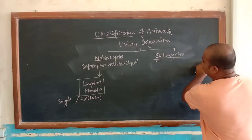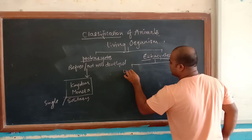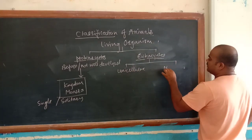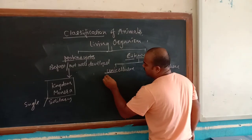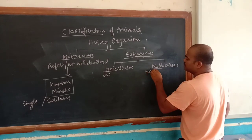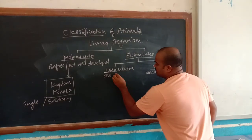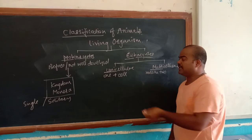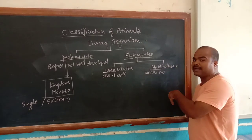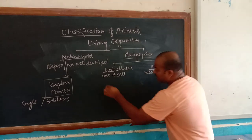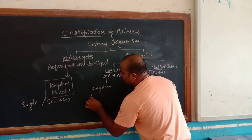In eukaryotes, it will be categorized under two subtypes. One is unicellular and the second one is multicellular. Uni means one and multi means more than two. In the unicellular organism, only one kingdom is categorized, known as Protista.